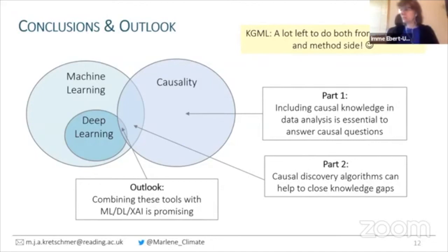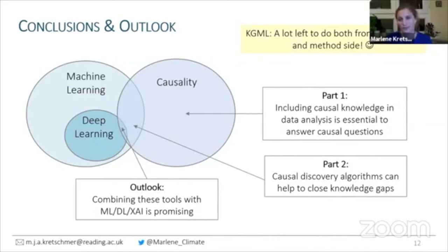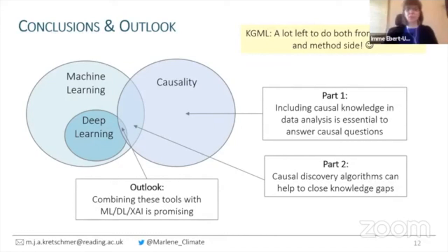How do you account for possible false discoveries given so many possibilities? In the causal discovery part, the basic approach is to have significance thresholds. With multiple testing involved, you can apply false discovery rate corrections. We showed in a Science Advances paper that you can control your false discovery rate to the pre-set significance level of, say, 5%, which is especially relevant in a high-dimensional setup.